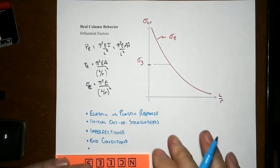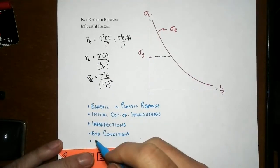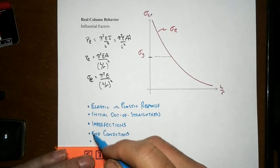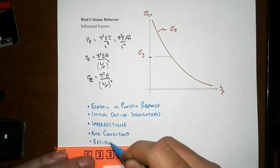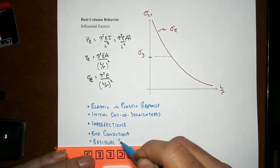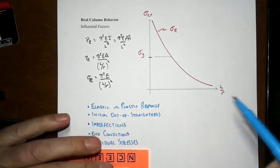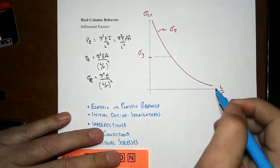And especially for any cross section made where heat is involved, like steel or aluminum where you're rolling the section and have differential cooling, you're going to end up with residual stresses. All of these things will alter what we see in real column behavior.